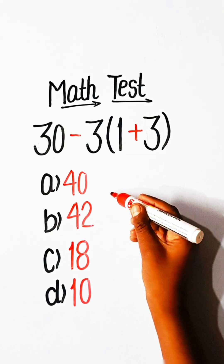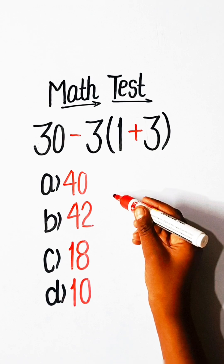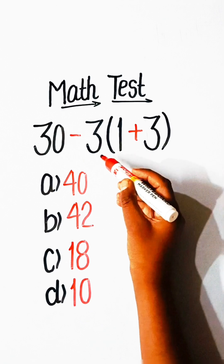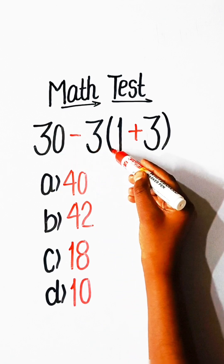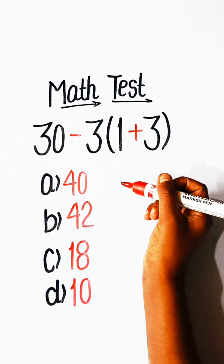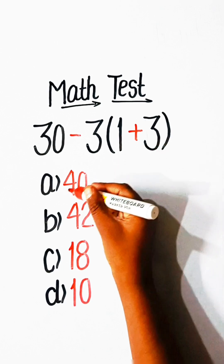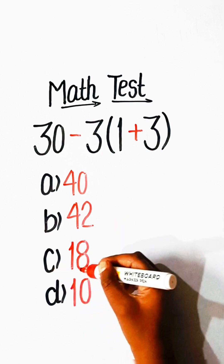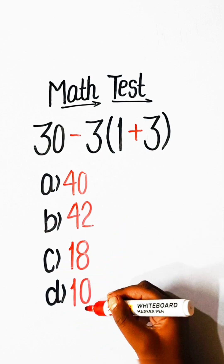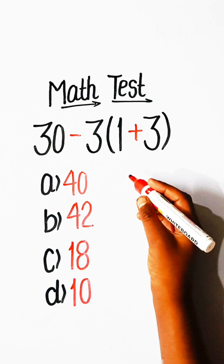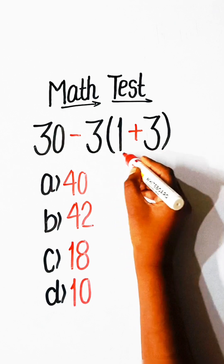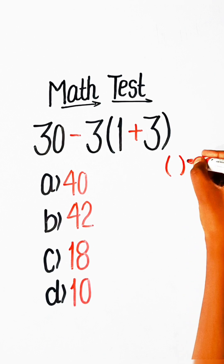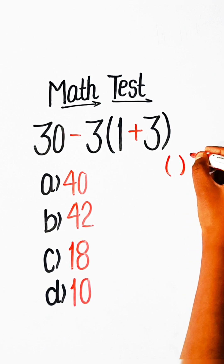Hello everyone, welcome back to my YouTube channel. In this video we will solve the math expression: 30 minus 3 under bracket 1 plus 3, equals what? Option A: 40, Option B: 42, Option C: 18, or Option D: 10. Here we have a bracket, which we put in first priority.